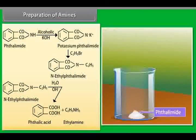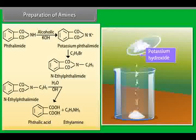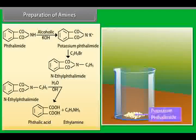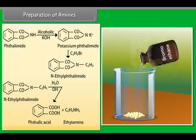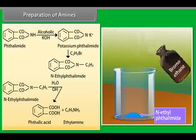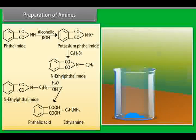Phthalimide reacts with alcoholic KOH to get potassium phthalimide which reacts with bromoethane to form N-ethyl phthalimide which on basic hydrolysis gives ethylamine and phthalic acid.